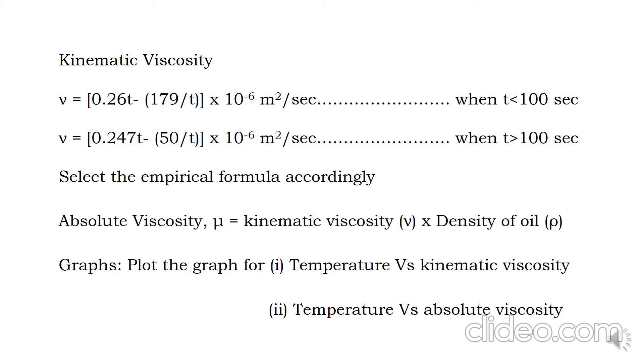Kinematic viscosity is 0.247 times (t minus 50) divided by t, times 10 to the power of minus 6 meter square per second.